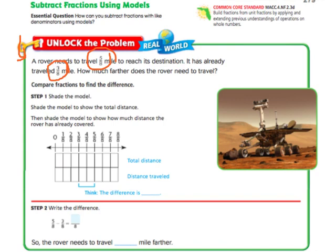So our first step is to shade in the model. Shade the model to show the total distance. So we need to go a total of five-eighths. So we're going to color in all the way up to this five-eighths line.